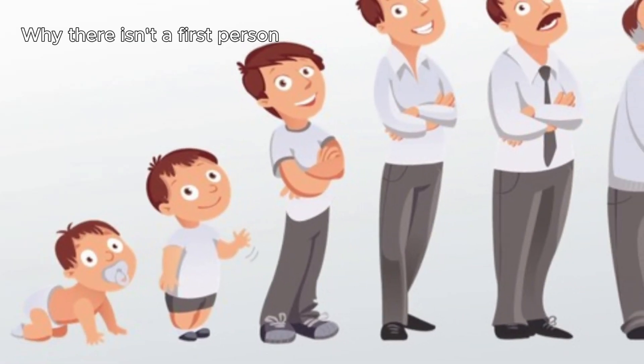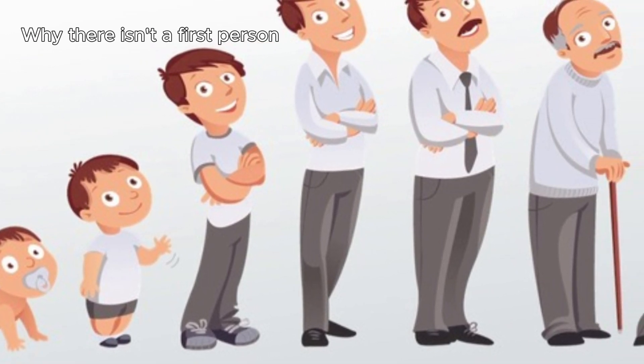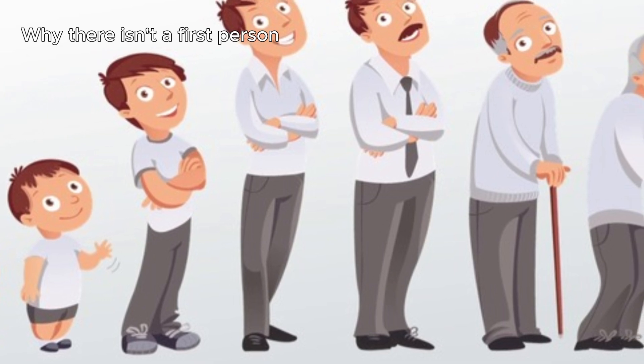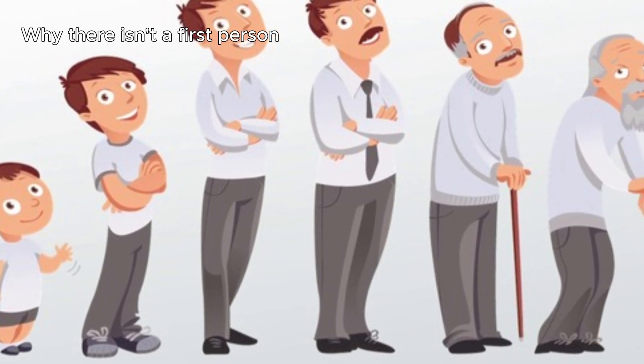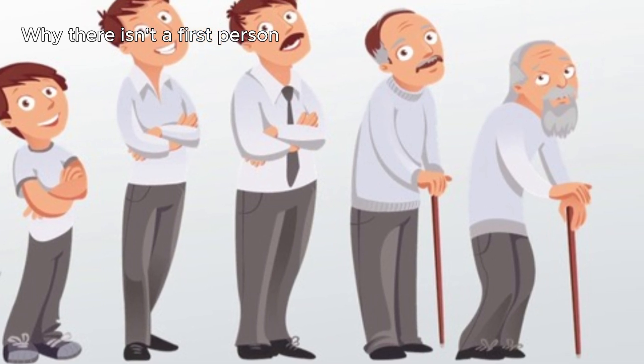Now, why isn't there a first person? It seems intuitive that there has to be somebody first. Well, here's a simple analogy. I was a baby at one time, then I became a child, then a teenager. Now I'm an adult, and eventually I will become an old guy. Simple enough, right?